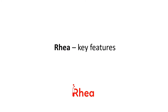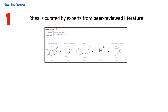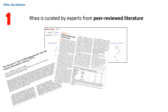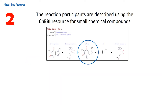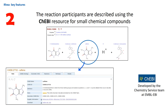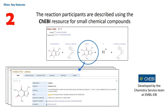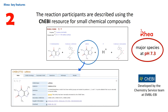What are the key features of RIA? RIA is curated by experts based on the peer-reviewed scientific literature. Curators have gone through more than 14,000 publications and used them to annotate and describe RIA reactions in detail. The reaction participants are described using the KEBI resource for small chemical compounds, and the convention adopted by RIA is to represent the major species of chemical compounds at pH 7.3.